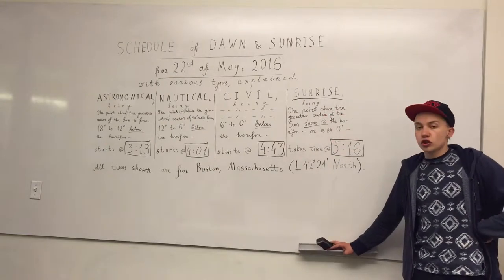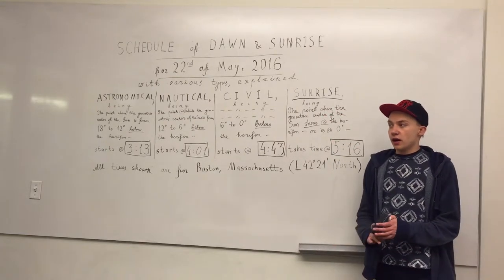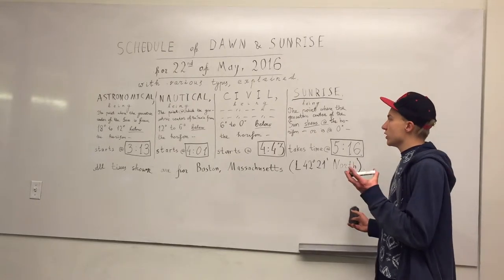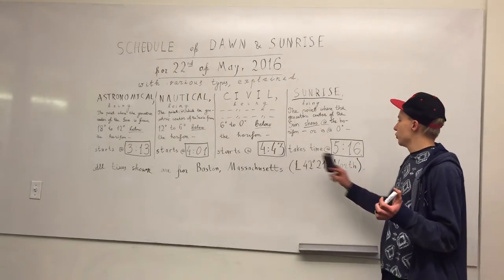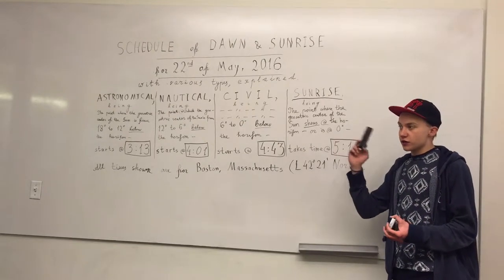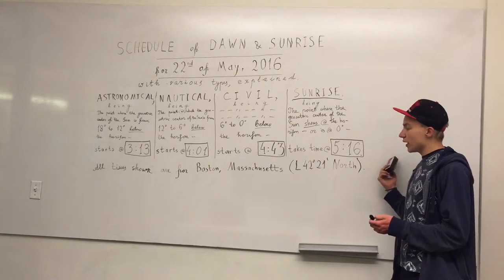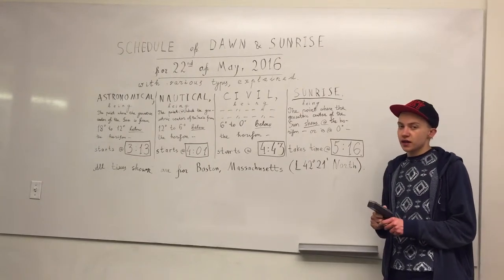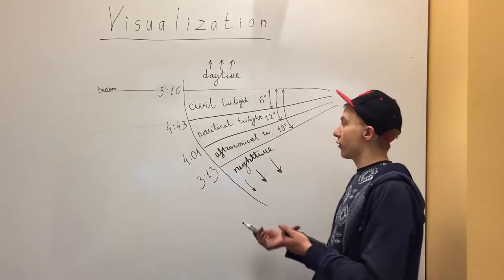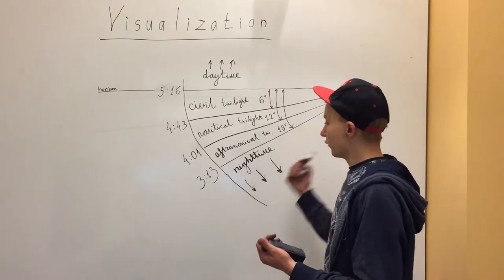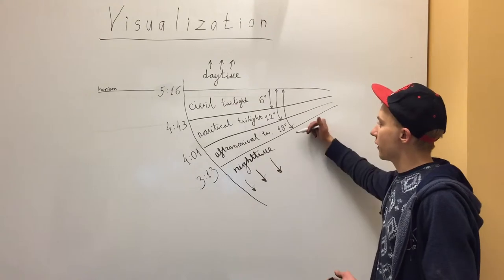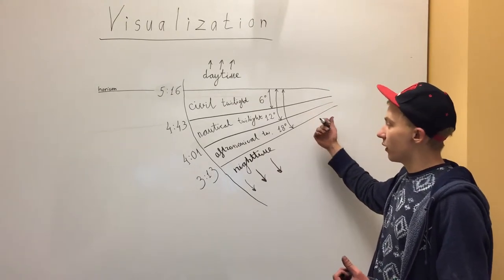What I'm going to show you now are my observations outside from these two moments in time, from a really high point, so we could actually see the horizon and see the sun rising. You can see how the surface of the Earth moves from the earlier point to the later point as we approach different times of the twilights.